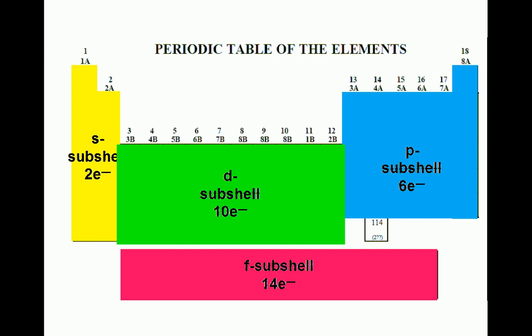We can see that the number of columns in each block is equivalent to the number of electrons that the particular subshell can hold. Similarly, the D block holds 10 electrons and the F block holds 14 electrons.